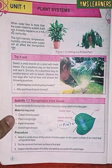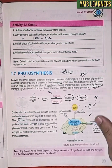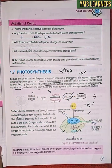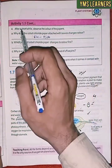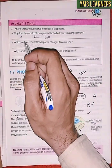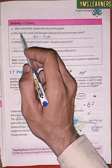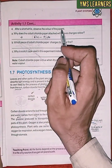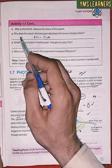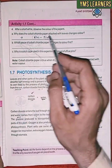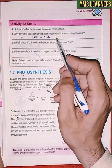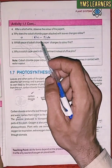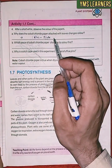This is page number 7, with a short question. After a short while, observe the color of the paper. Why does the cobalt chloride paper attached to the leaves change color?